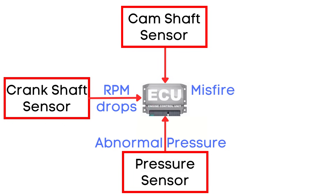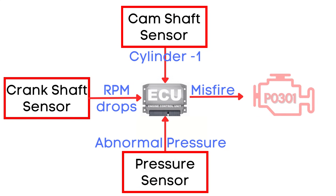The Camshaft Position Sensor helps the ECU determine which specific cylinder is experiencing the misfire. And that's how the P0301 trouble code is triggered.